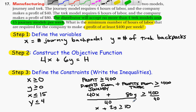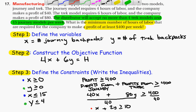So we've completed step number 3. Our constraints are: x ≥ 0, y ≥ 0, x ≤ 15, y ≤ 4, and x + 2y ≥ 10. In the next video, we'll go on to step 4.